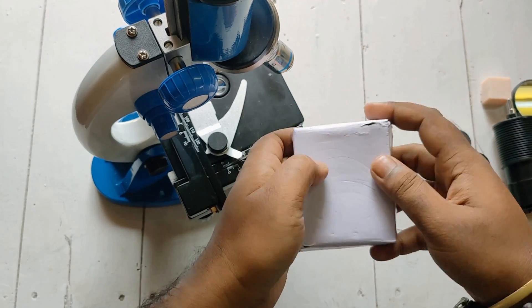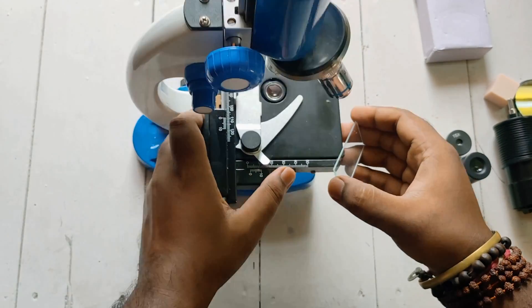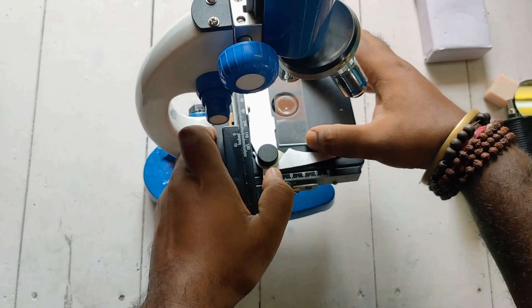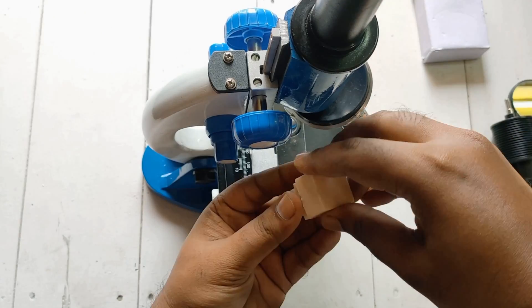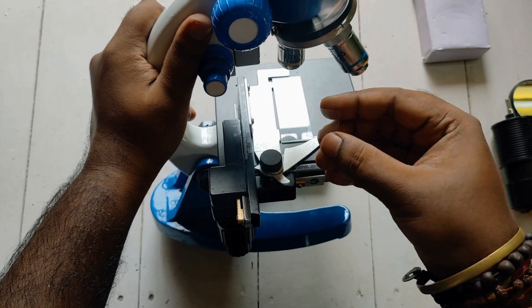After making the slides, you need to pull this trigger and place the slides like this. This cover slip needs to be placed here with a little drop of water on the slide.